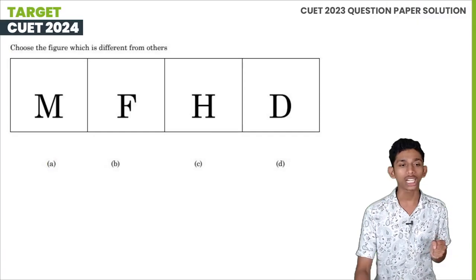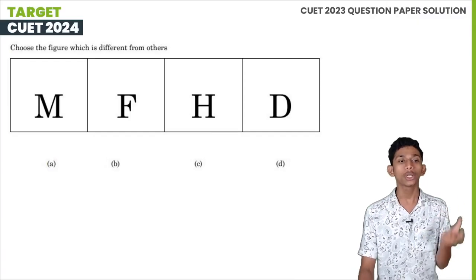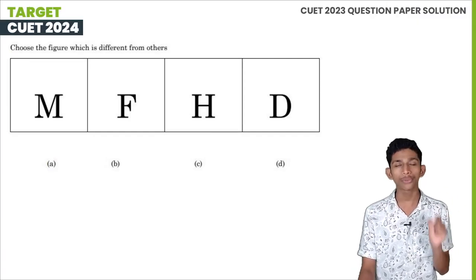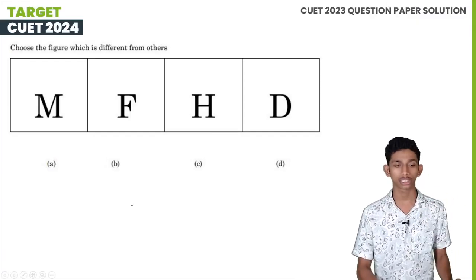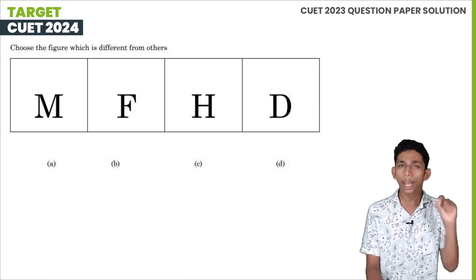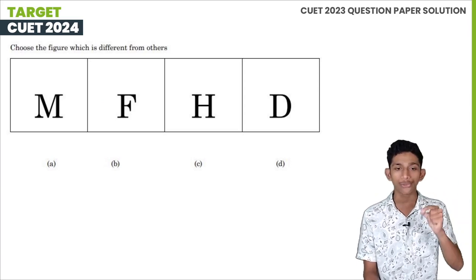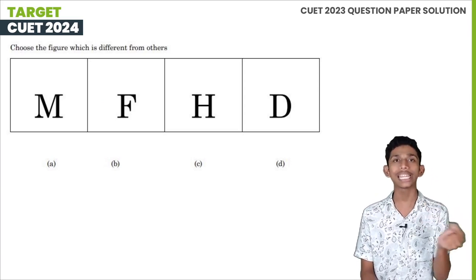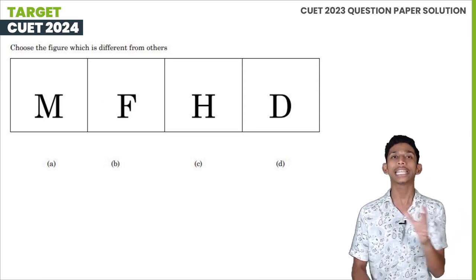In the first question, choose the figure which is different from others. There are four figures. The first one is M, next is F, next is H, next is D.